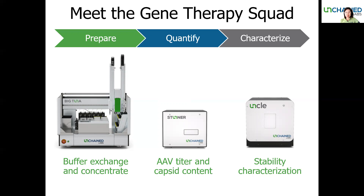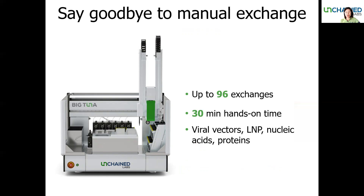First, we have the BigTuna, which can be used to fully automate the buffer exchange process and prepare your AAV samples into the right working concentration range. Then we have the Stunner to quickly give you AAV titer and capsid full/empty ratio. The third tool is our versatile stability characterization platform, UNCO, to answer the two big questions on AAV aggregation and capsid integrity. We know manual buffer exchange is a pain — it is a labor-intensive and hard-to-scale process, especially when you have many samples. That is why we created BigTuna to help you take over this chore.